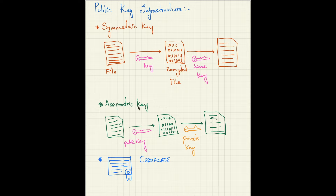In asymmetric key, we have a file and two different types of keys: one is a public key and another is a private key. The public key is available openly and anybody can use it to encrypt the file. The private key is only with the users who should be able to access that file, and they use it to decrypt the file. There's one more type: certificate-based authentication.